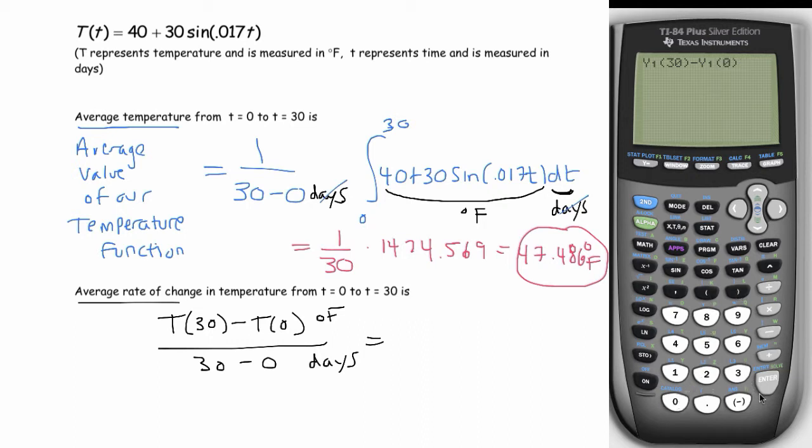So that gives me 14.645 divided by 30. And that gives you 0.488, and the units would be degrees per day.